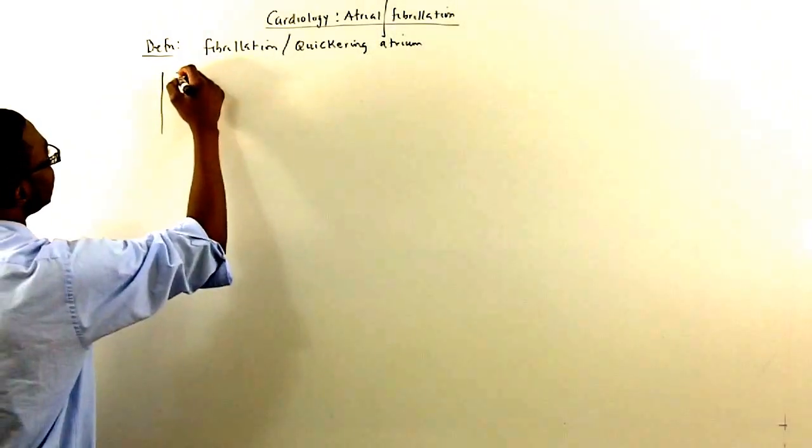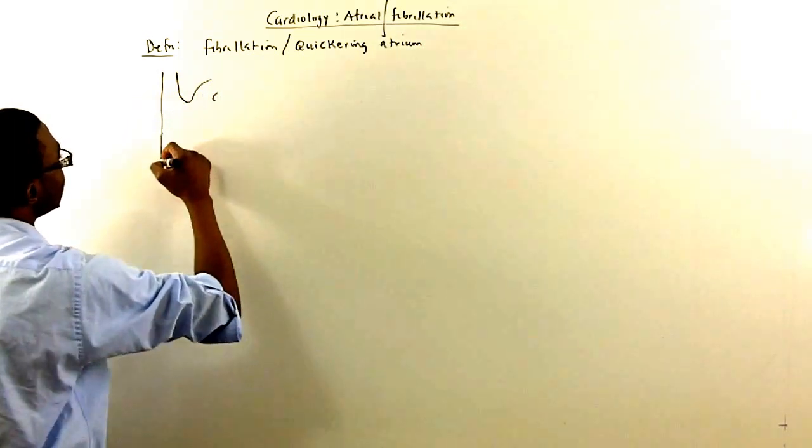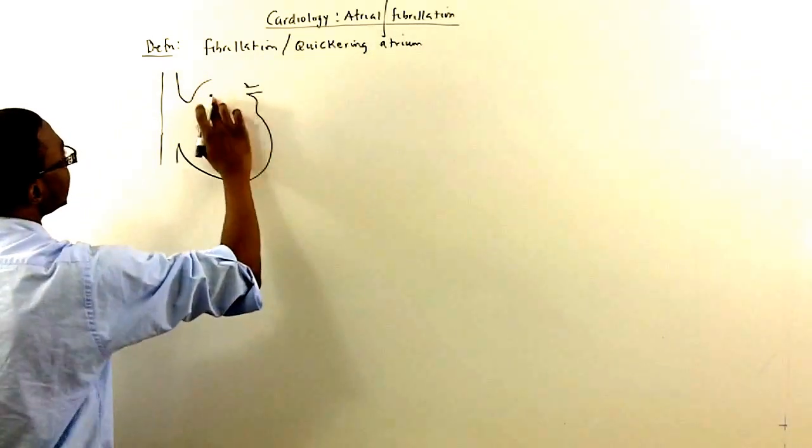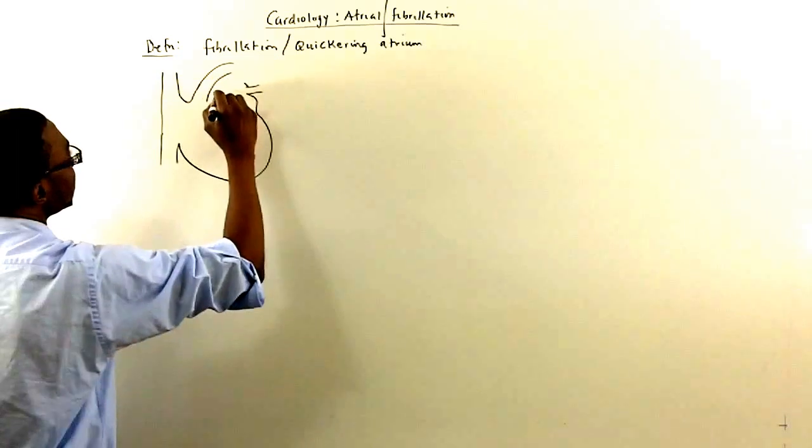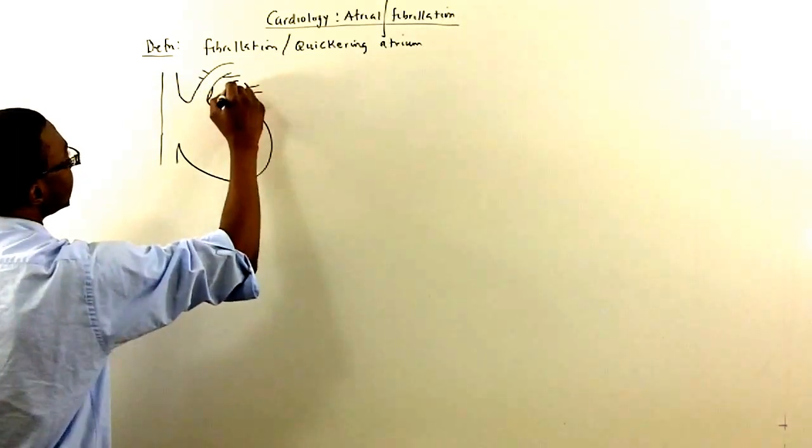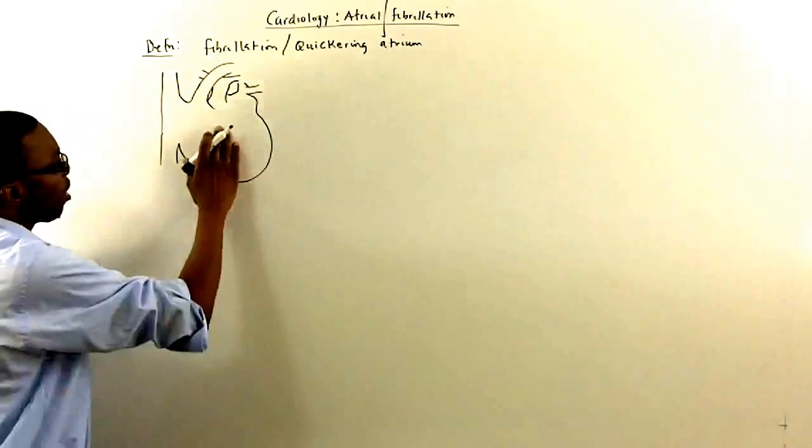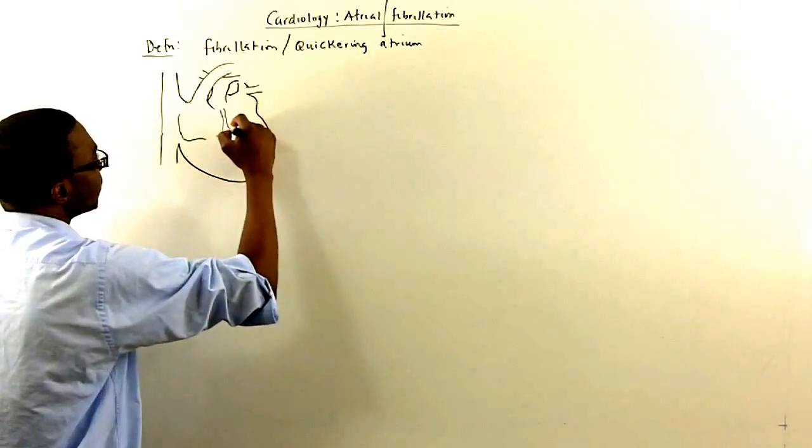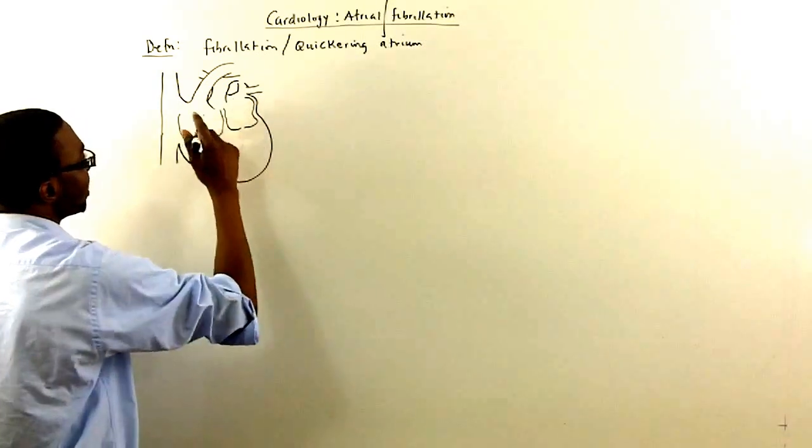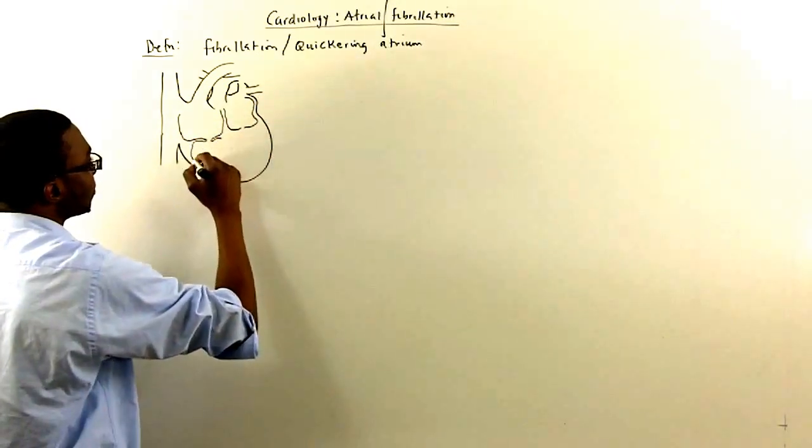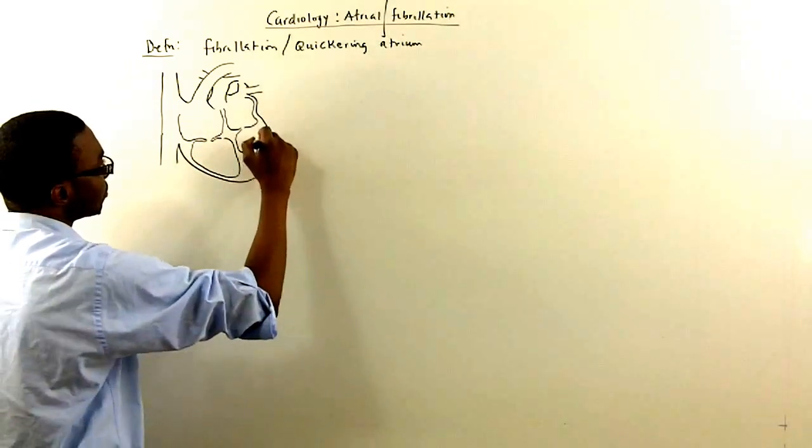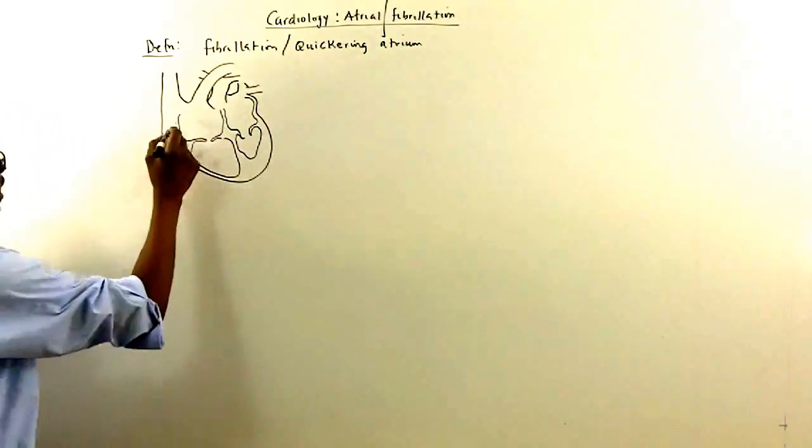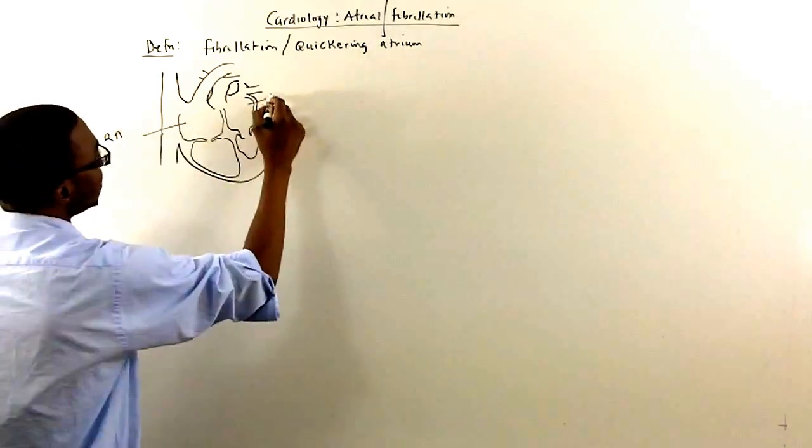So here's our heart. Inside the heart, we know we've got two atriums. We've got the left atrium and the right atrium. We've got the ventricles. So we've got the atrium right here, right atrium, the left atrium.